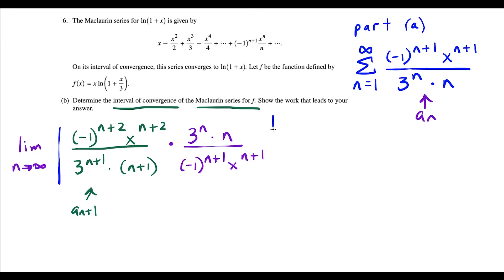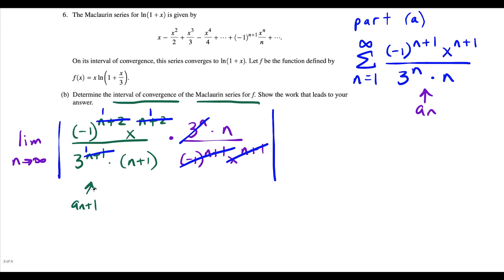Just setting this up is going to get us some credit for the question. But now to get more credit, we have to simplify and go through the rest. We're looking at x to the n plus 2 over x to the n plus 1 — this one's going to cancel out completely, and n plus 2 is exactly one more than n plus 1, so we're left with x to the first. Same logic with 3 to the n versus 3 to the n plus 1 — 3 to the n cancels completely, leaving 3 to the first on bottom. Also negative 1 to the n plus 1 goes away completely, and n plus 2 replaces with an exponent of 1.